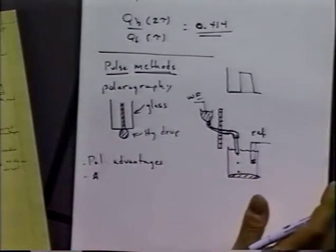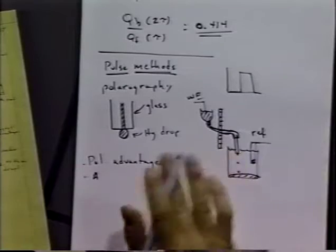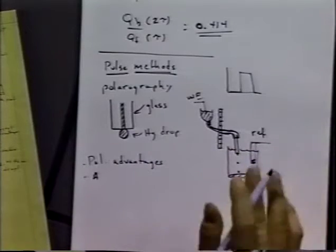In addition to the advantages, there's some significant disadvantages which weren't always apparent at the start. First of all it uses mercury, it uses a lot of mercury in a way that often allows it to be spilled and contaminate your laboratory. Some of these old polarography laboratories probably are very hazardous places to be in because of the amount of mercury that's floating around. So it's lost its luster for that reason.